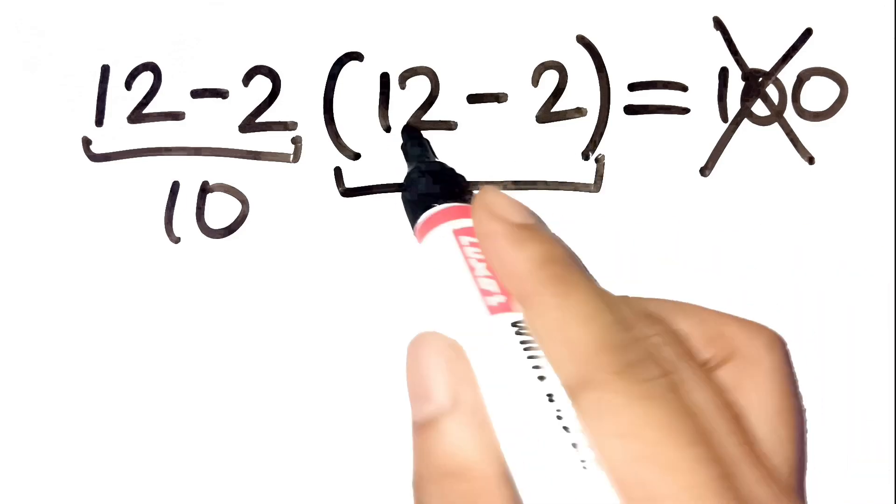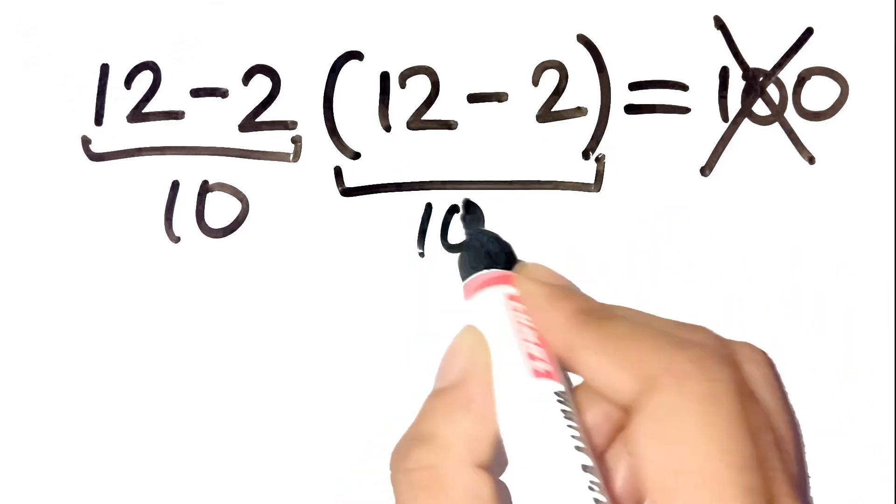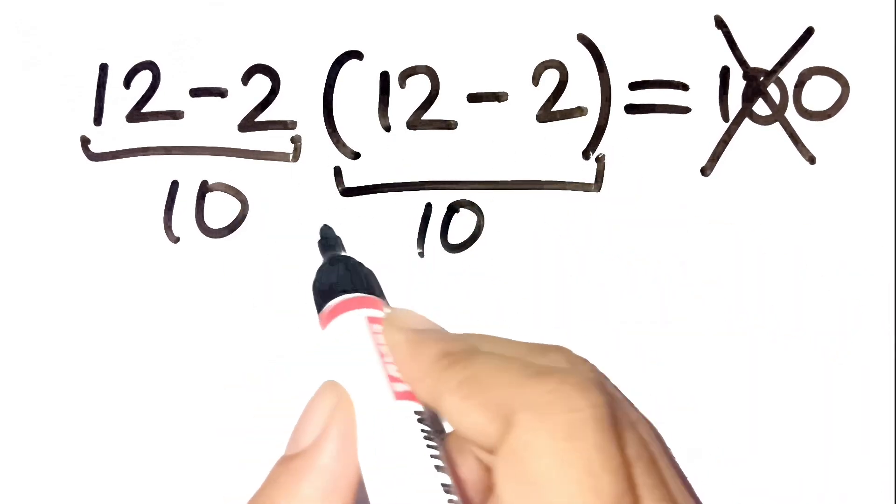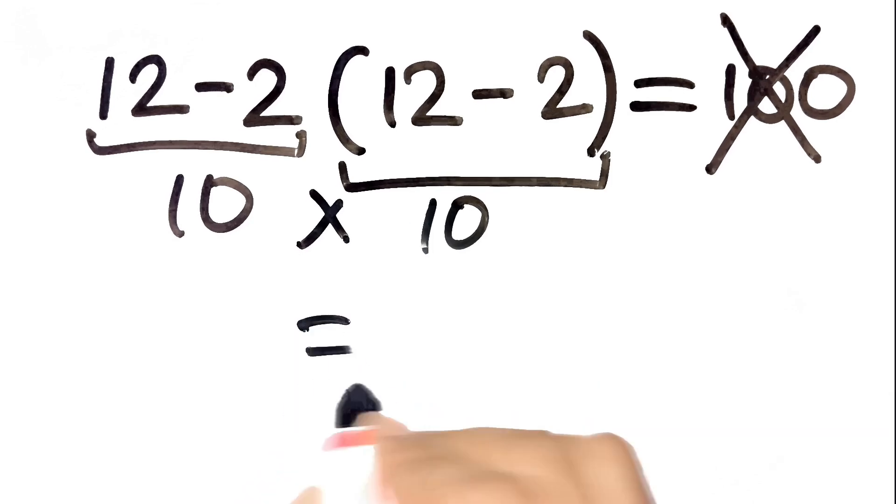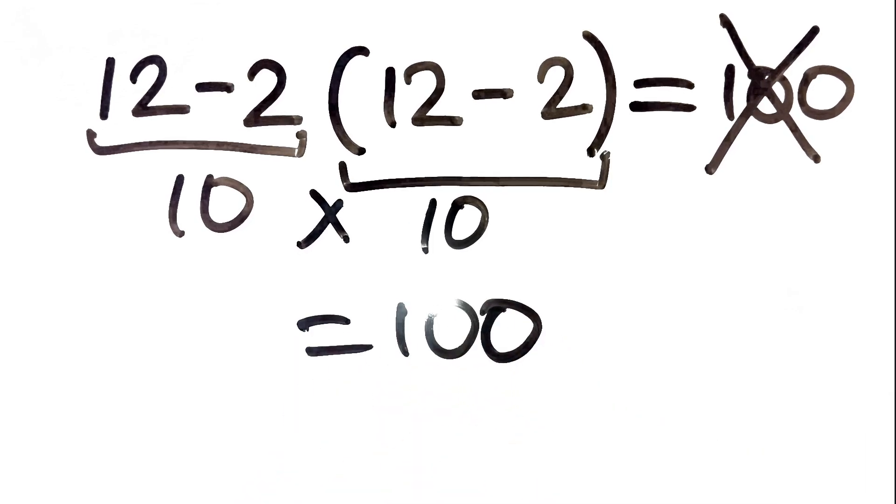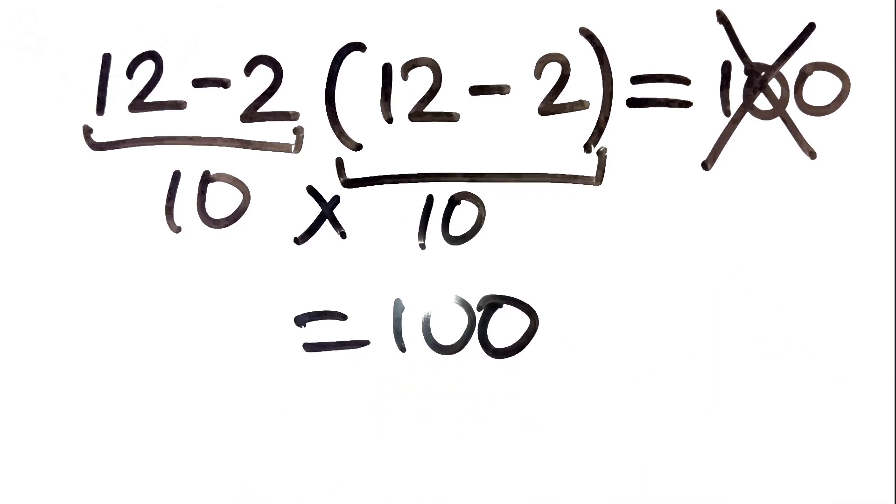Then they look inside the parentheses, 12 minus 2 again, another 10. And suddenly their brain jumps to 10 times 10 equals 100. It feels so obvious, right? But hold on.